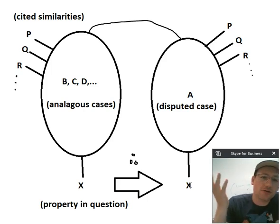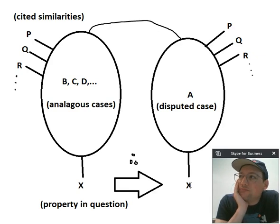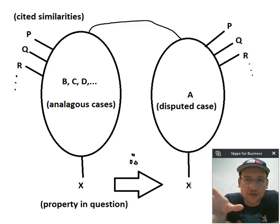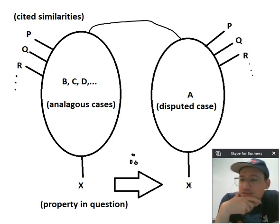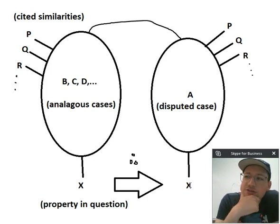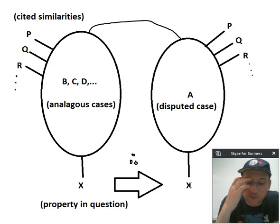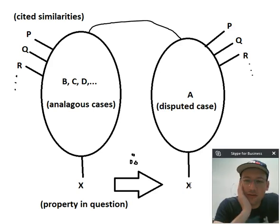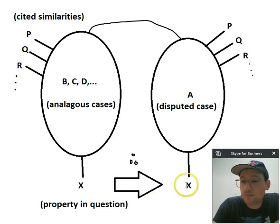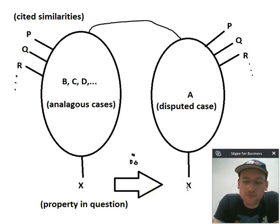Argument from analogy is something we use constantly. You're always relating cases you're currently making judgments about — or making predictions about — based on things you've already experienced that were similar. Like when you meet a new person and you say, 'you remind me of my friend so-and-so,' and you bring all those expectations based on your knowledge of that person — their personality, interests, beliefs, and values — as a way to make predictions about something you can't directly observe.